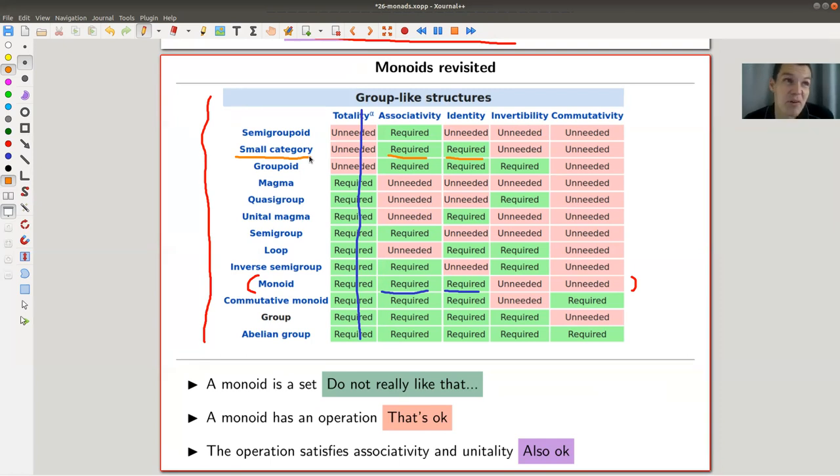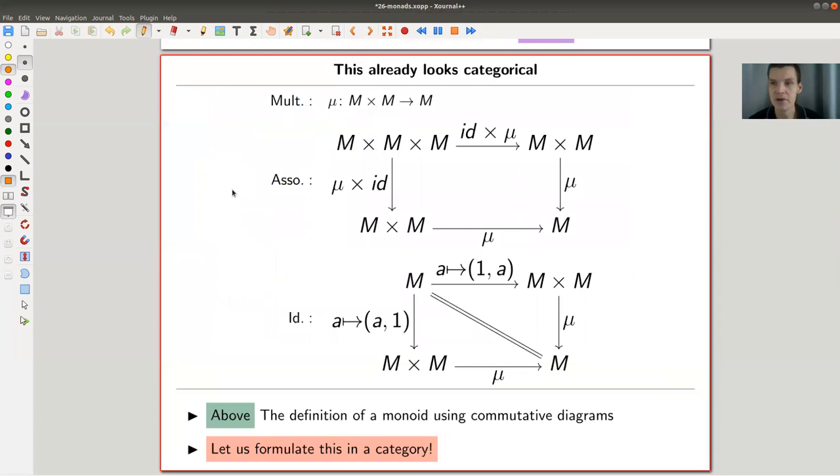So we just kind of want to get rid of the point that monoids are based on sets. Well, maybe because monoids are based on sets and monads are not based on sets, that's why they have different names. I'm not quite sure where the name monad actually comes from. But anyway, let's stay just on topic here. So a monoid, you can phrase that categorically.